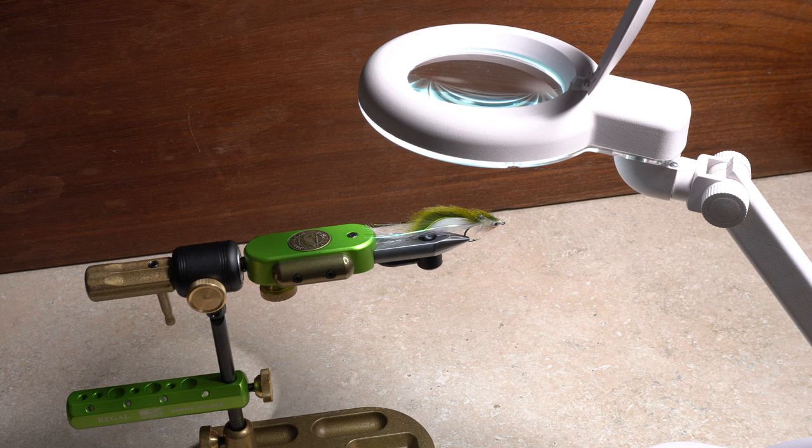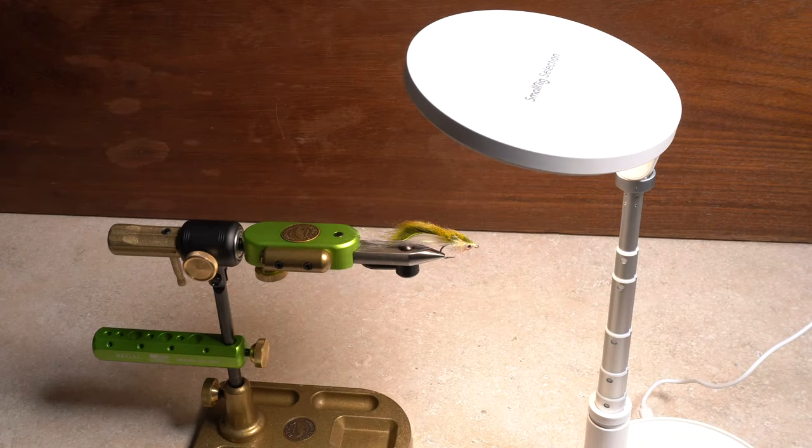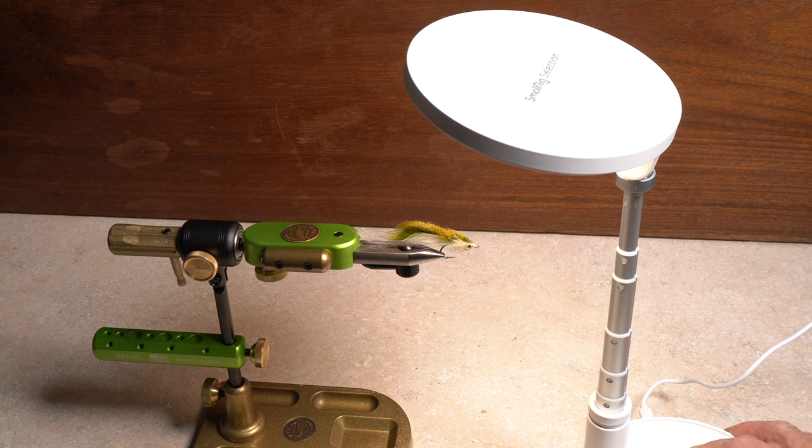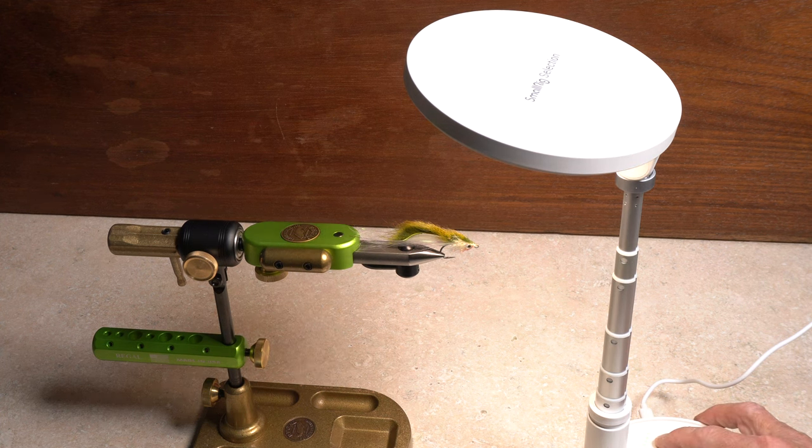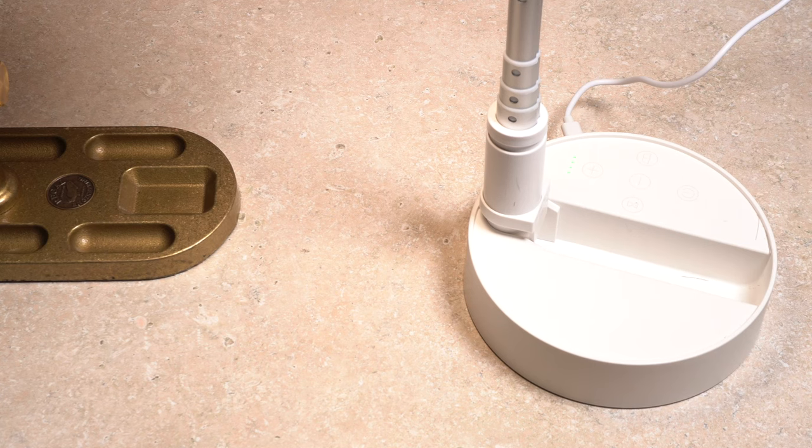They encircle the fly with light. Disc lights for vlogging, like this one, produce a wonderful soft light in varying intensities. This particular model can run off of AC power but also has a rechargeable battery.